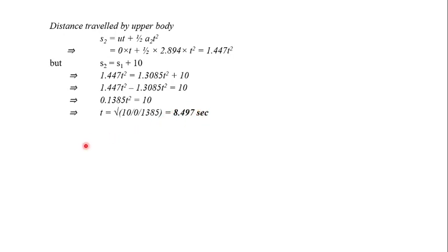Once we get t, we will get s1. S1 is the distance traveled by lower body. Substituting t value, we will get 94.476 meters.